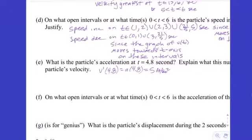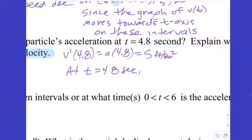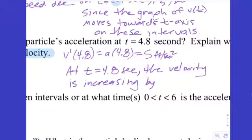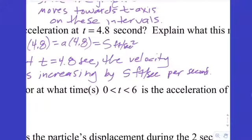Explain what this number means in terms of the particle's velocity. Acceleration is the rate of change of velocity. So you'd say: at t=4.8 seconds, the velocity is increasing by 5 feet per second each second. You have to get the word velocity in there, using velocity units per time.